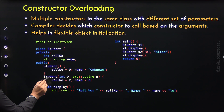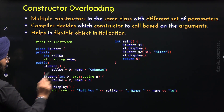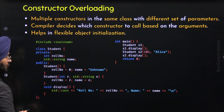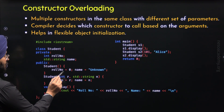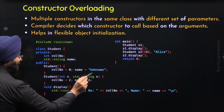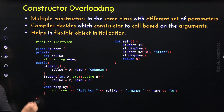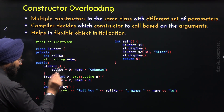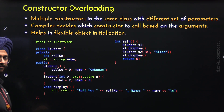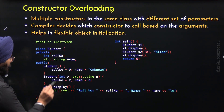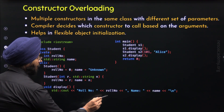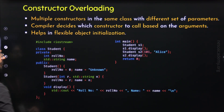Here is the parameterized constructor, because this constructor has parameters. We have parameters R and N, and through these parameters we are providing values to role number and name. After this, we have the display function which allows us to display role number and name on the screen.